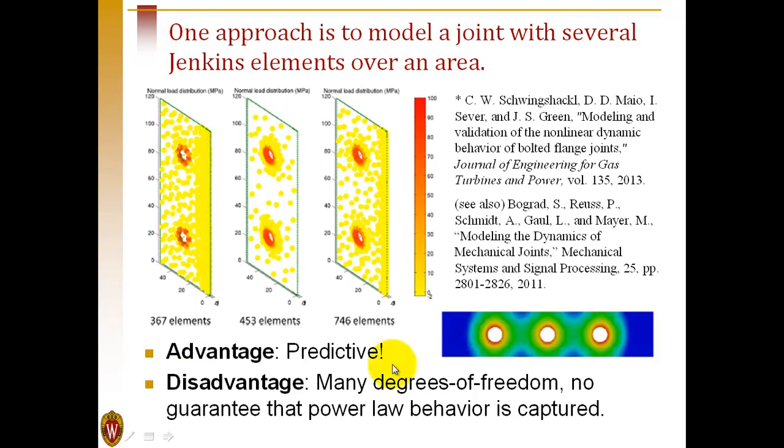This is an amazing approach because it does allow us to predict what will happen. The disadvantage is that each joint requires many degrees of freedom, and we can't necessarily guarantee that we'll get the kind of behavior out of this model that we observe experimentally.